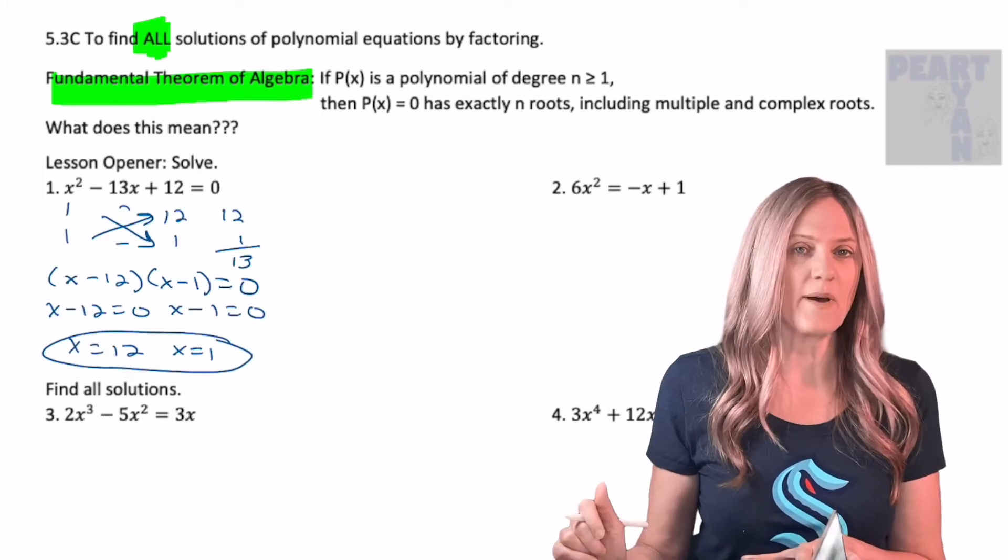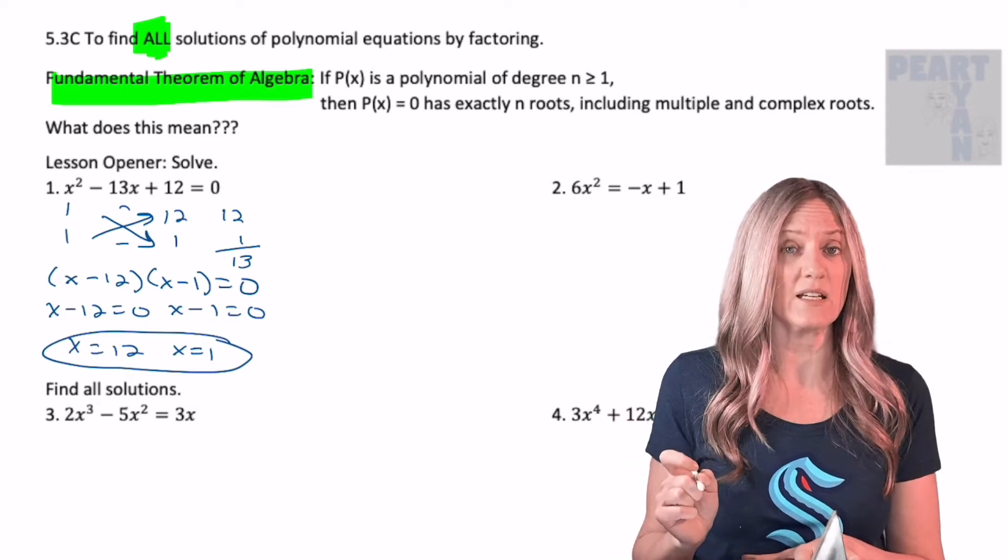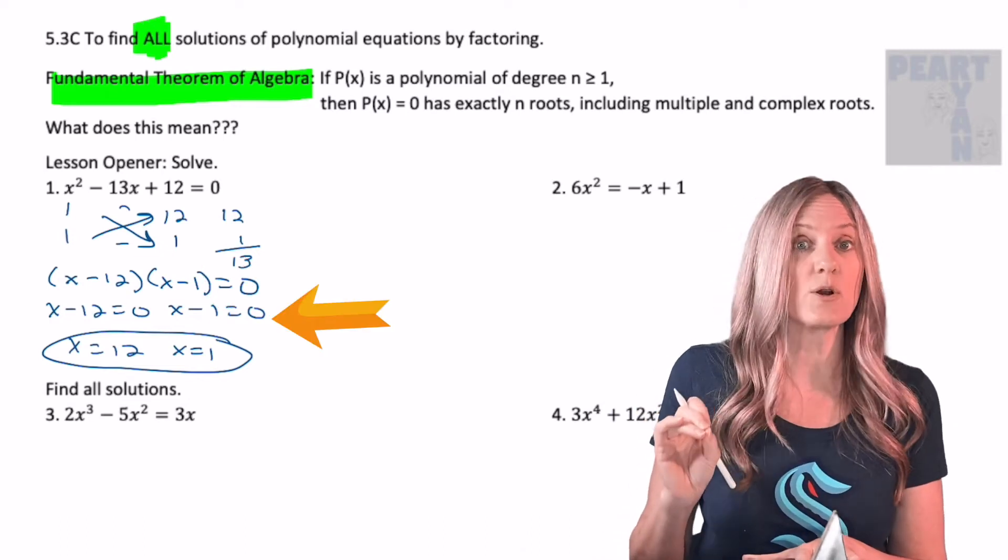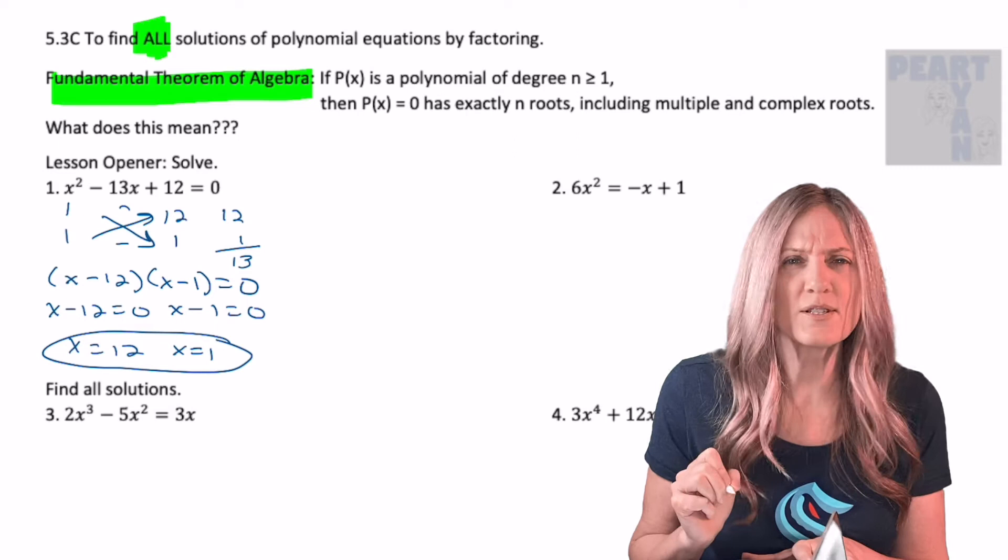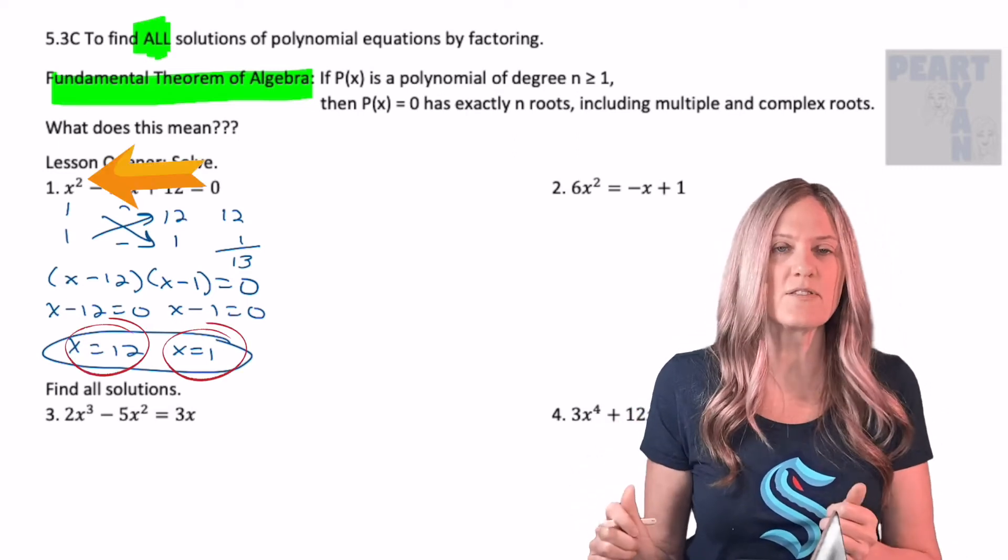I have full faith in you on that one. However, I do want to make sure that we are communicating mathematically. Did you keep it in an equation going all the way through? And did you clearly show the zero product property? Two solutions. Our degree was two, and we have two solutions. Fundamental theorem of algebra.